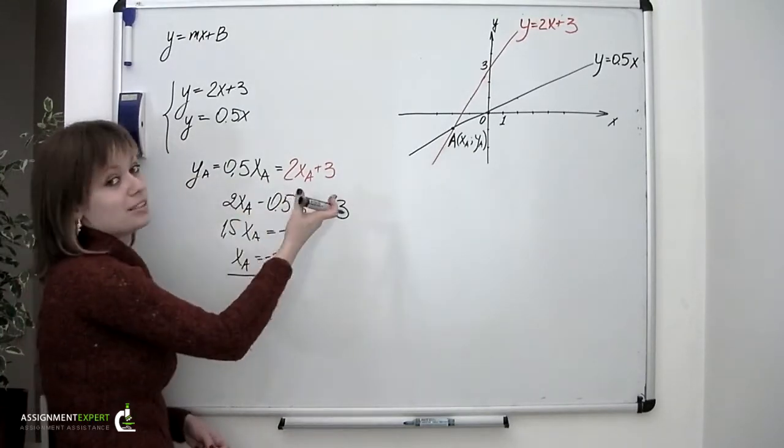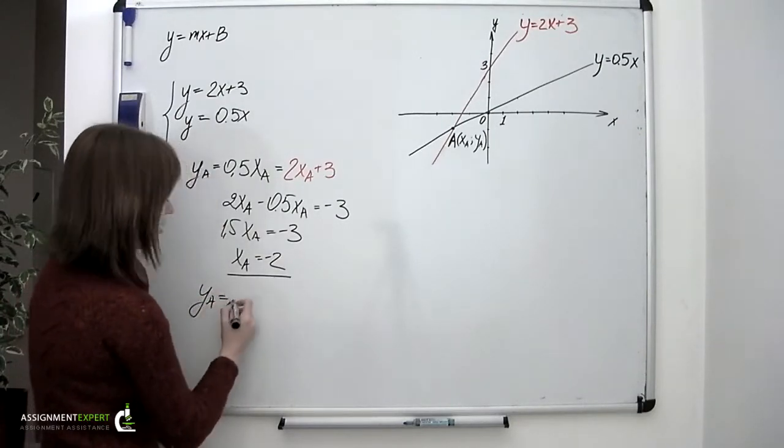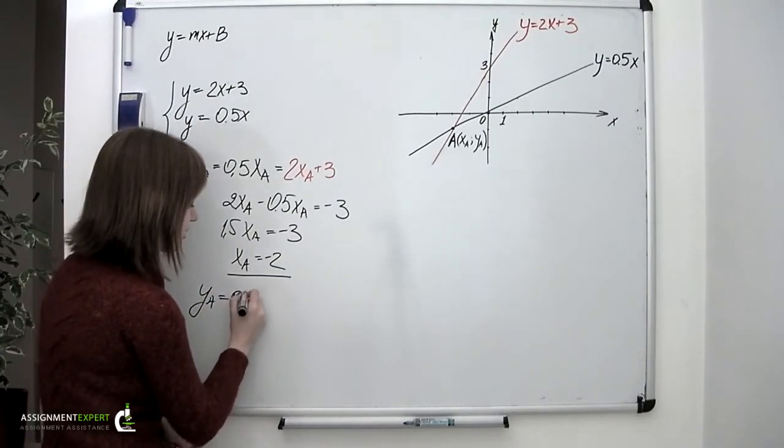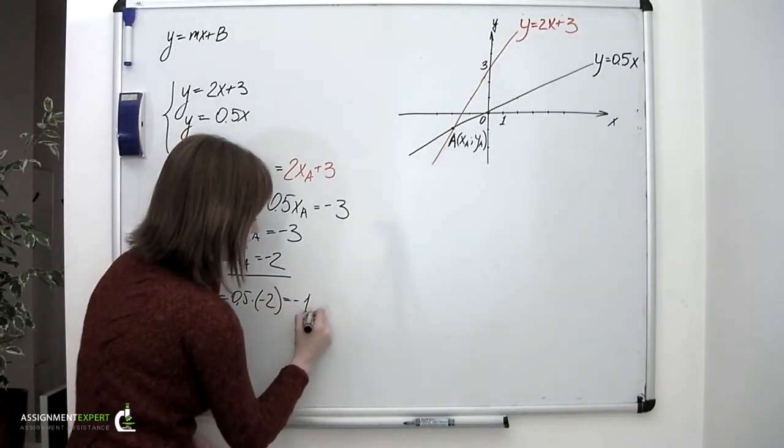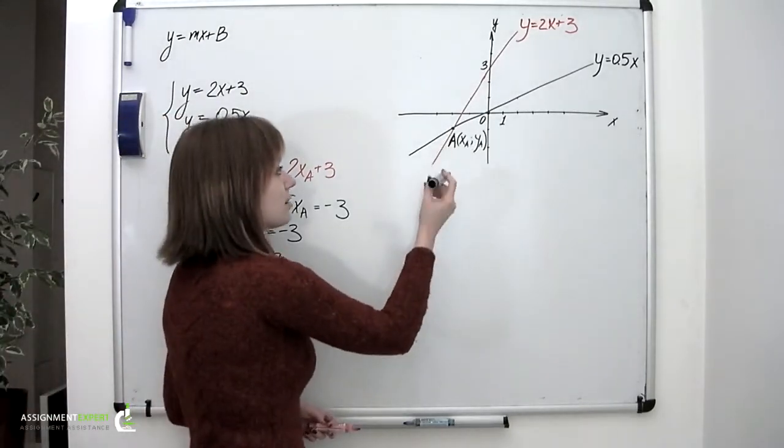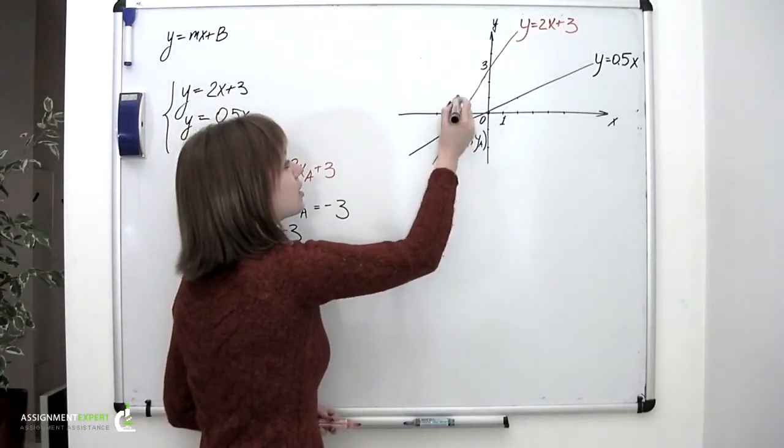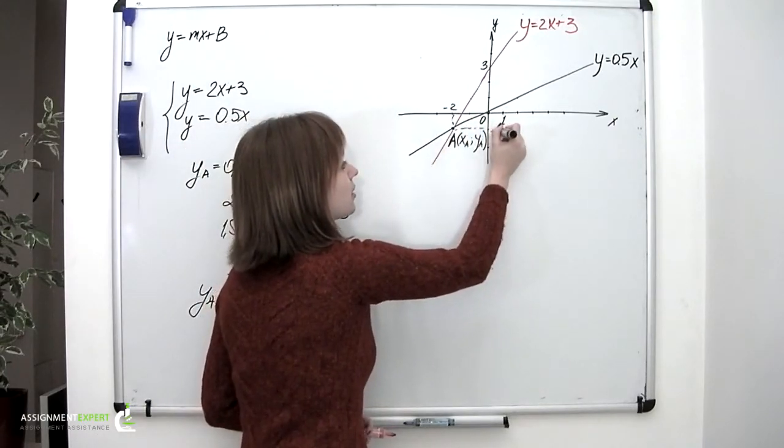But we could have picked the other one as well. So the y coordinate is 0.5 multiplied by negative 2, which yields negative 1. So the coordinates of the point A are negative 2 and negative 1.